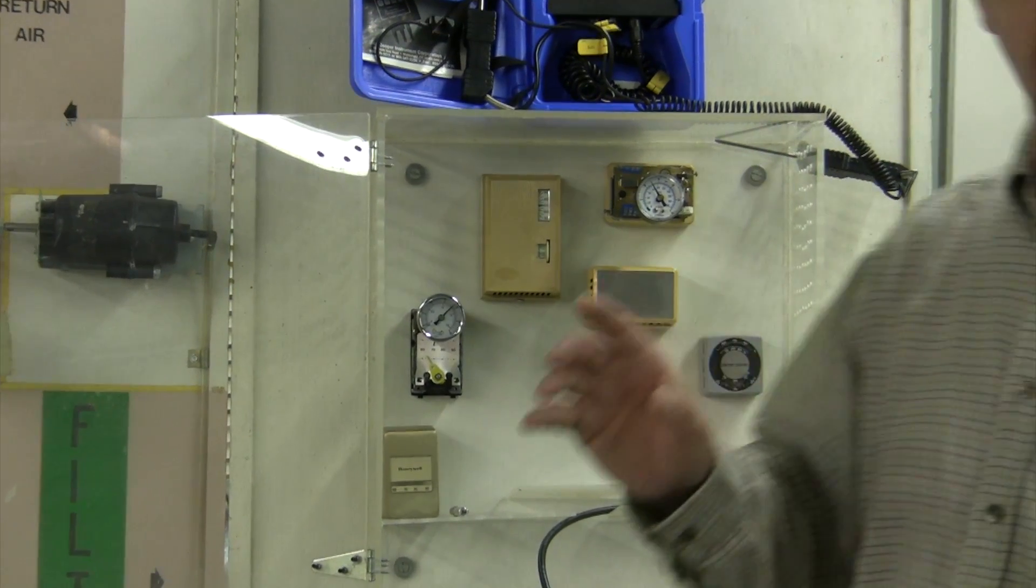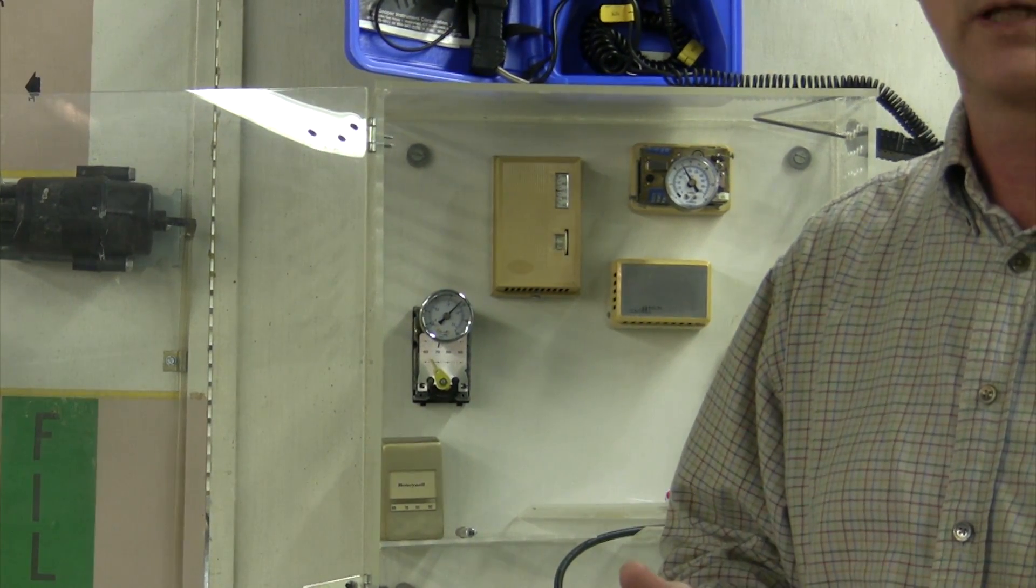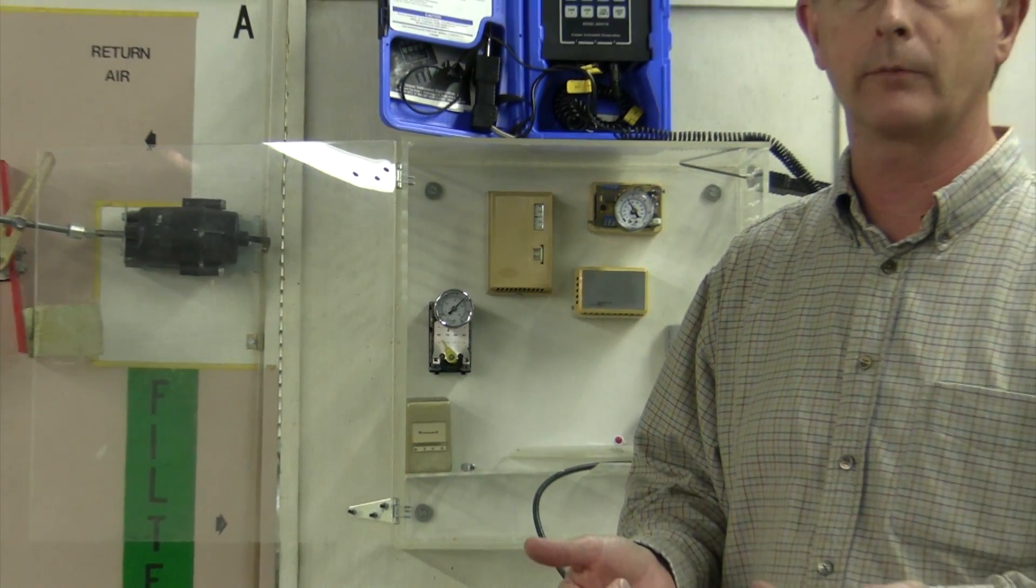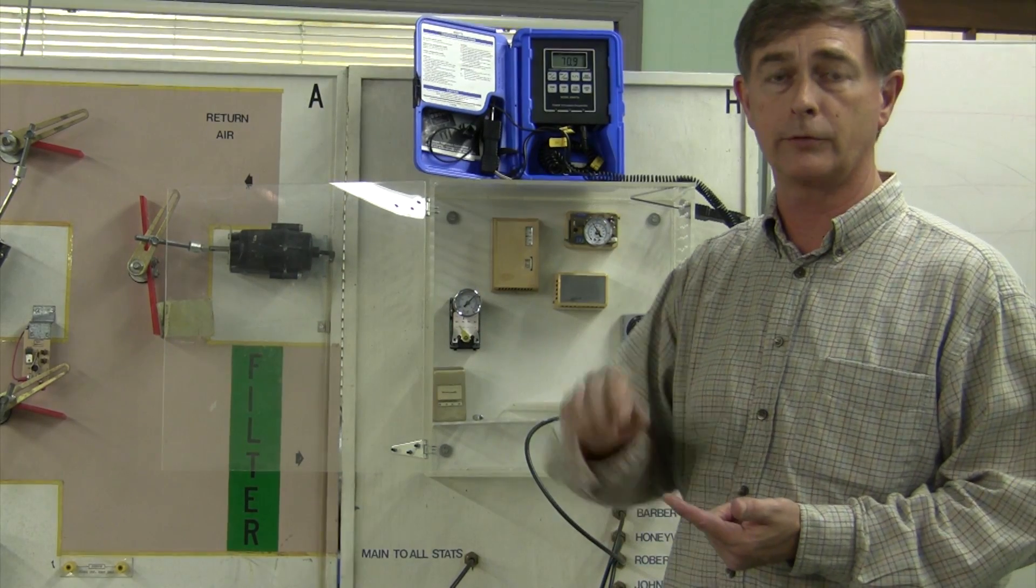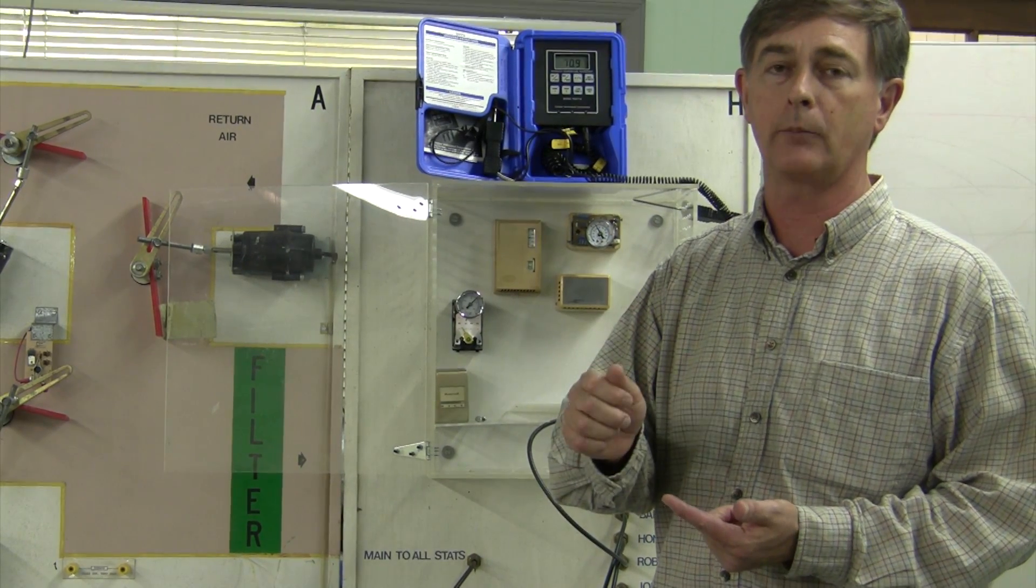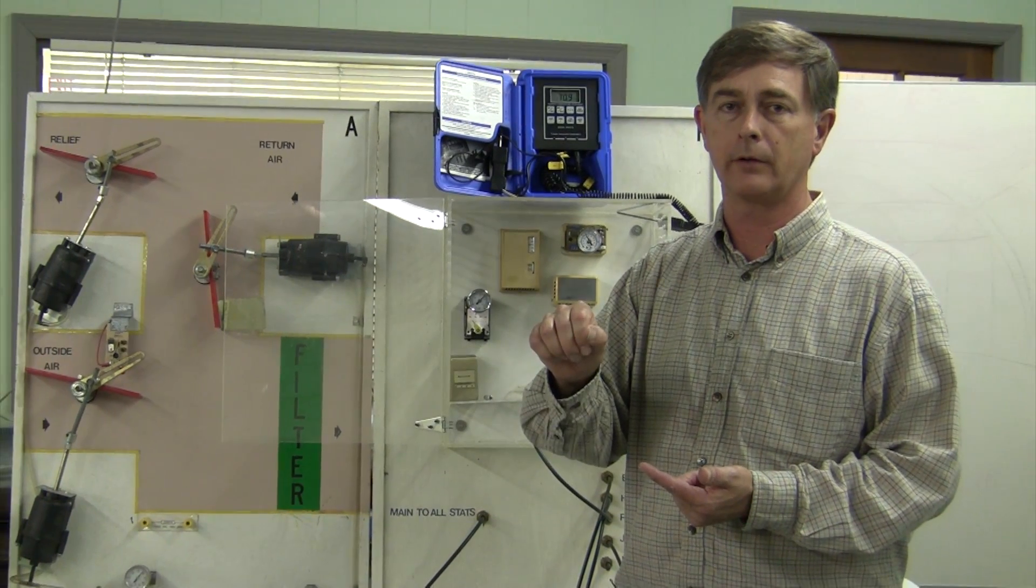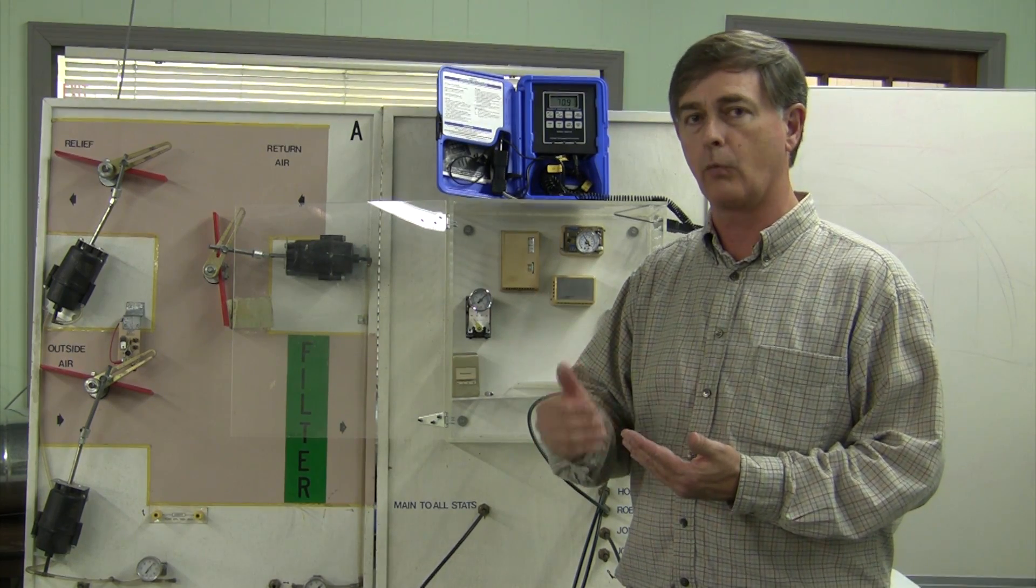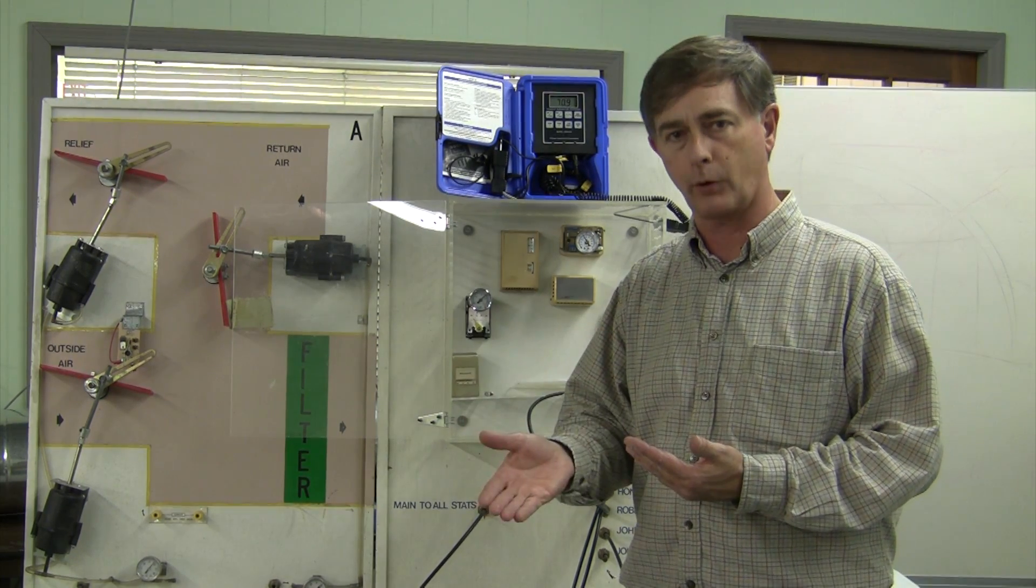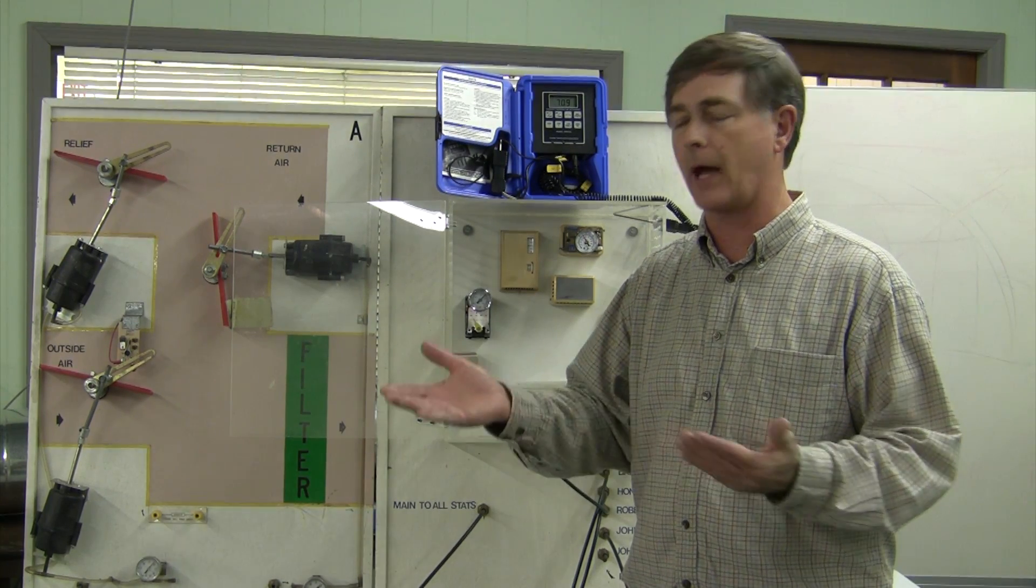First thing we're gonna do is look at the basic strategy when you want to calibrate a pneumatic thermostat. You need to check the ambient temperature of the room, set the thermostat for that ambient, and then you calibrate the thermostat to meet that ambient. When you adjust it, we need to know what output pressure, what branch pressure we expect, and that's dependent on the application.